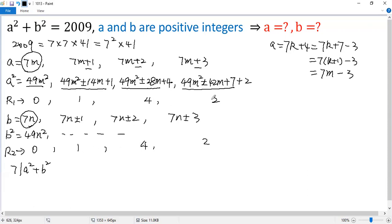the remainder is 1. 4 and 2, the remainder is 6. Not good. Anyway, so you see, the only possible situation would be both a and b are multiples of 7.